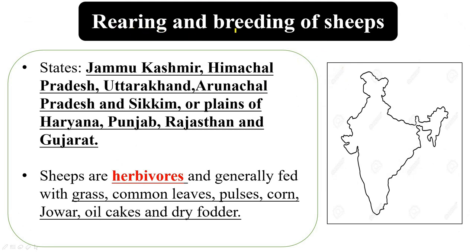Rearing and breeding of sheep in India is carried out in Jammu and Kashmir, Himachal Pradesh, Uttarakhand, Arunachal Pradesh, Sikkim, and the plains of Haryana, Punjab, Rajasthan, and Gujarat. Sheep are herbivores and generally eat grass, common leaves, pulses, corn, jowar, oil cakes, dry fodder, etc.